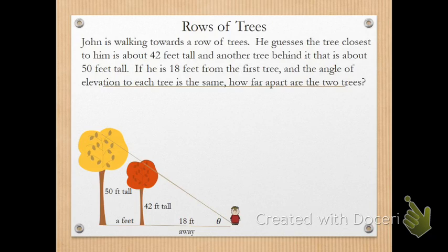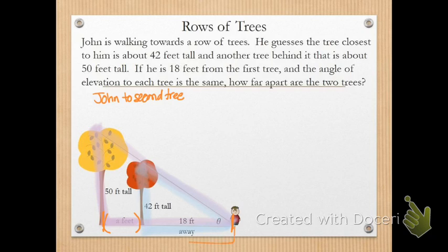So he's just looking for the distance from one tree to the other. So in order to find this, we're going to have to look at this as two separate triangles. There's one triangle here with John in the first tree. And then there's another bigger triangle out here between John and the second tree. However, what we're looking for is not really a part of either. It's the difference of the two triangles. So really, we need the distance from John to the second tree. And then we need the distance of John to the first tree, which we have. It tells us that's 18.